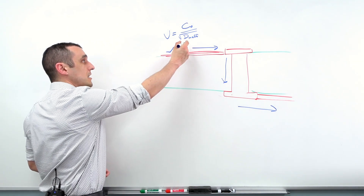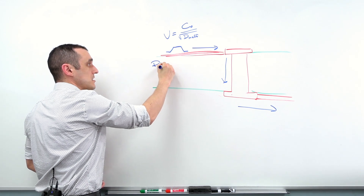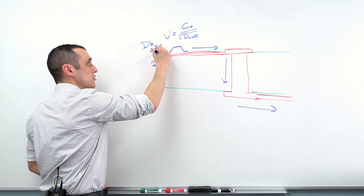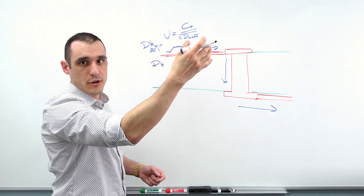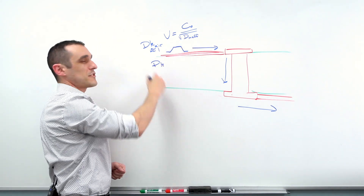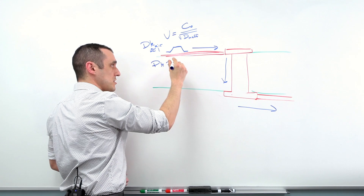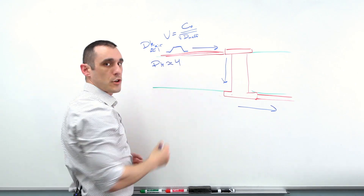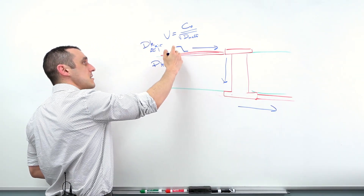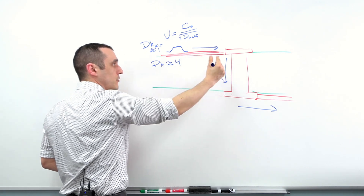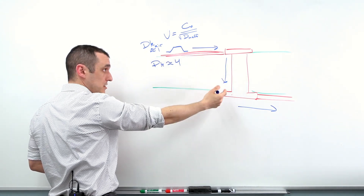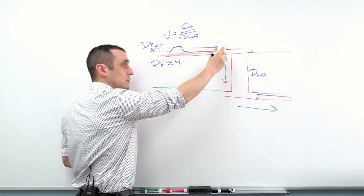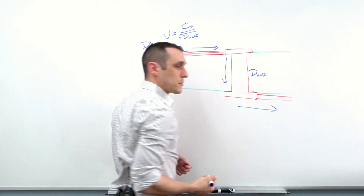This εeff is determined by the dielectric constant of the substrate as well as the dielectric constant in air, which is very close to 1. For typical FR4 laminates, the substrate value could be 4 to 4.8 — let's just go with 4 for this demo. Once the signal gets over to the via and has to travel through the substrate, there's going to be a different εeff seen by the signal as it makes its way along the via and out to the other side.